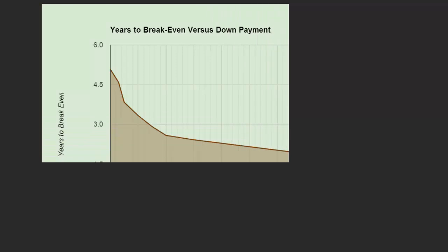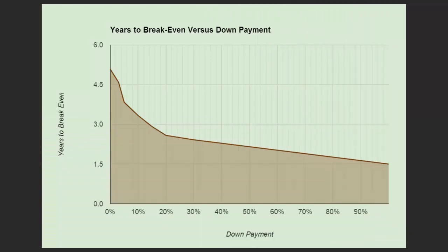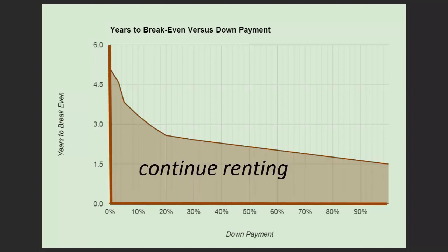Now that we know the two primary factors impacting your decision, let's look at the second graph in the spreadsheet. One axis represents the amount of your down payment. The other is the minimum amount of time you plan to own your home. If your situation puts you within the shaded region, it's better to continue renting. But if you determine that your situation puts you outside of the shaded region, it's time to consider buying a home.